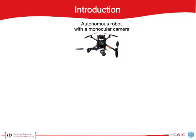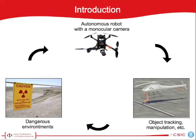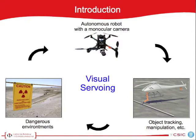Considering an autonomous robot with a monocular camera attached, it is usually expected to interact with the objects of the scene, such as tracking them or manipulating them. Usually this robot will work in a special environment, inaccessible for humans, and it is expected not only to be autonomous but to be robust to unexpected changes. So the robot should be able to interact autonomously with objects using the camera information robustly. This vision-based control is called visual servoing.